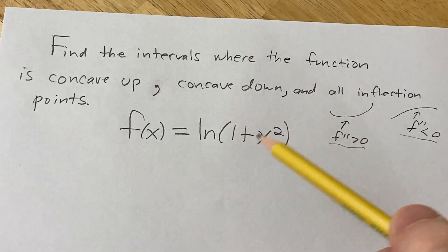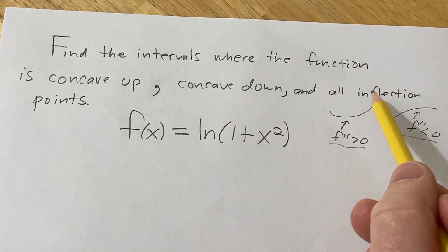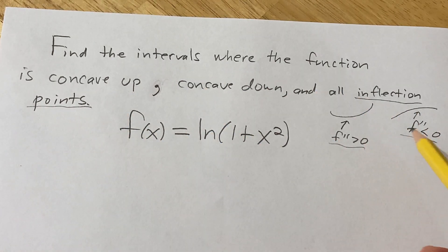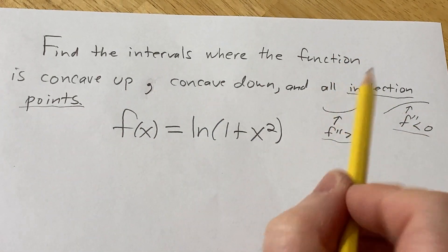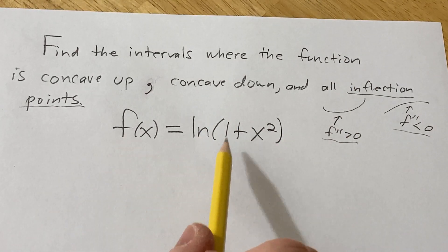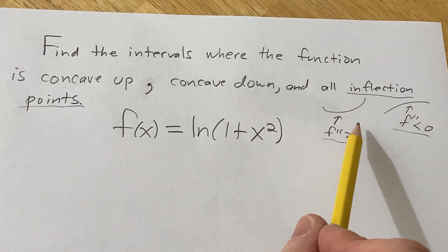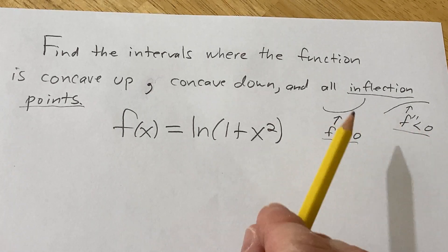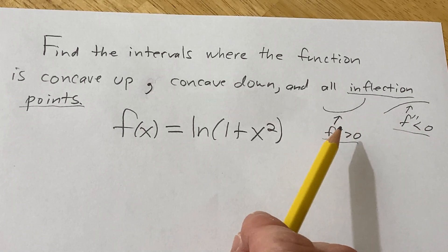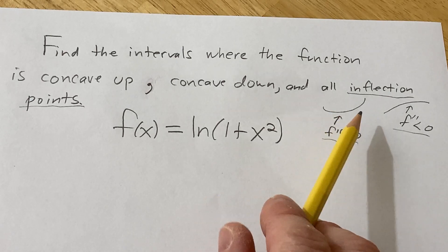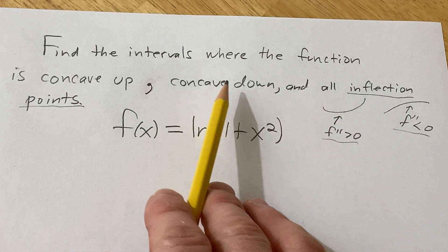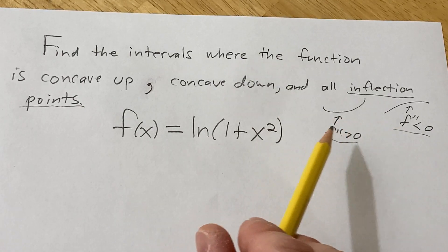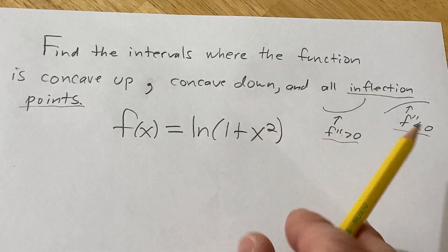Therefore we have to look at the second derivative of this function. An inflection point is an actual point on the graph of the function where the concavity changes. To find inflection points, we'll basically set the second derivative equal to zero and investigate any points where the concavity might change. Also, any points where things are undefined can be interesting because concavity could switch at places where the function is undefined.